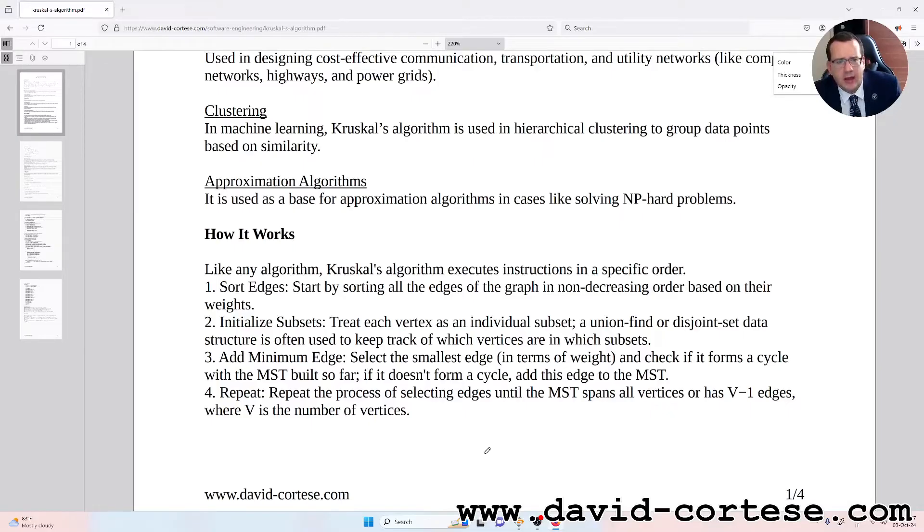Three, add the minimum edge. Select the smallest edge in terms of weight, and check if it forms a cycle with the MST built so far. If it doesn't form a cycle, add this edge to the MST.